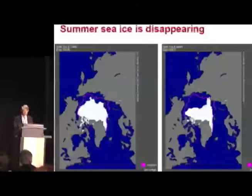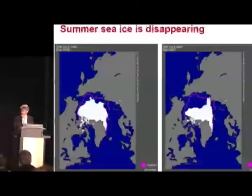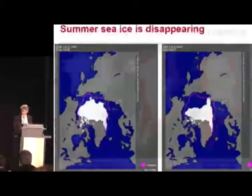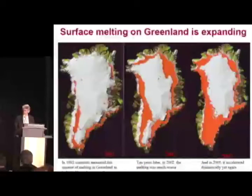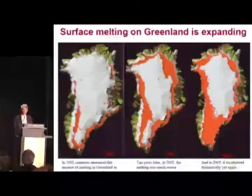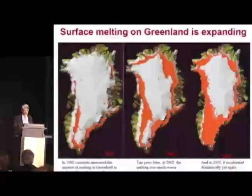A pace of disappearance much greater than was expected even a few years ago. Surface melting on Greenland — indicated by the red — shows 1992, 2002, and 2005. 2002 set a new record, and that record was shattered in 2005 for the extent of summer melting.